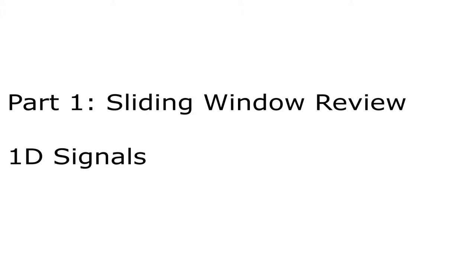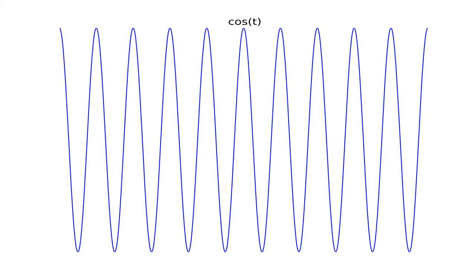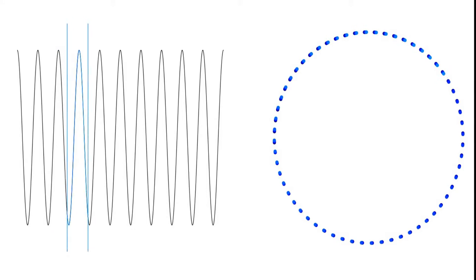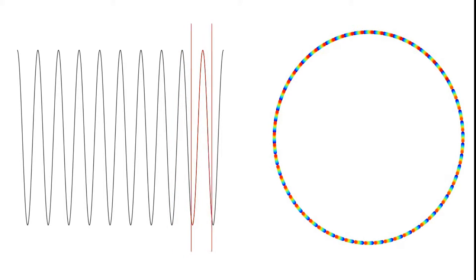Before launching into videos, let's first review sliding window embeddings of one dimensional time series data. This first video shows a pure sinusoid with a period of 60 samples. We slide a window of length 60 from left to right, and we display 2D PCA of the sliding window embedding on the right. As you can see, the embedding lies on a circle, and 100% of the variance is captured in two dimensions.